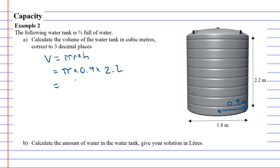Alright, what is that? Pi times 0.9, actually I've made a mistake. This is 0.9 squared. So 0.9 squared times 2.2. Alright, what do we get? We get to 3 decimal places, if they want it. So 5.598 cubic metres.